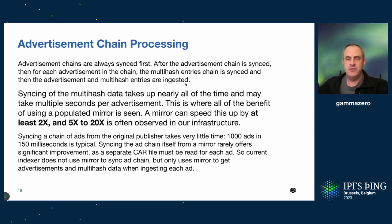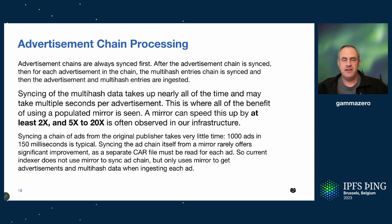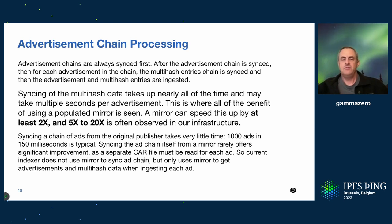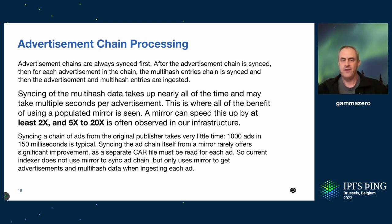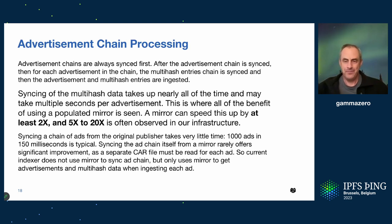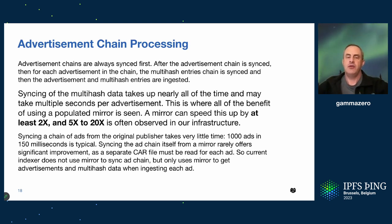On advertisement chain processing: an indexer syncs the chain of advertisements only, then for each advertisement syncs the bulk data. The bulk data is where we get the huge speed up. If you're going to be a mirror implementer, the most important aspect is syncing the bulk data — it almost doesn't matter if you sync just the advertisement chain from the mirror. A chain of 1,000 ads typically takes about 150 milliseconds, but each ad syncing its bulk data often takes multiple seconds per ad. So for a million-ad chain, we can pull the chain in seconds, but syncing bulk data from a mirror might give us 20 per second versus one every two seconds.